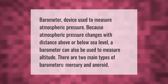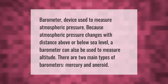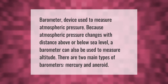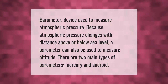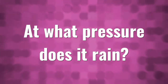A barometer is a device used to measure atmospheric pressure. Because atmospheric pressure changes with distance above or below sea level, a barometer can also be used to measure altitude. There are two main types of barometers: mercury and aneroid.